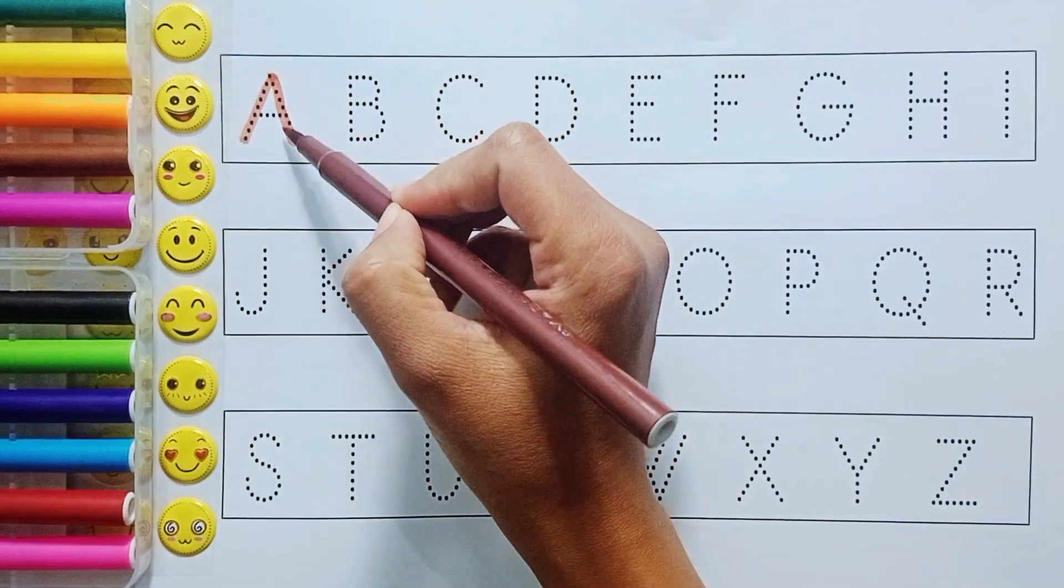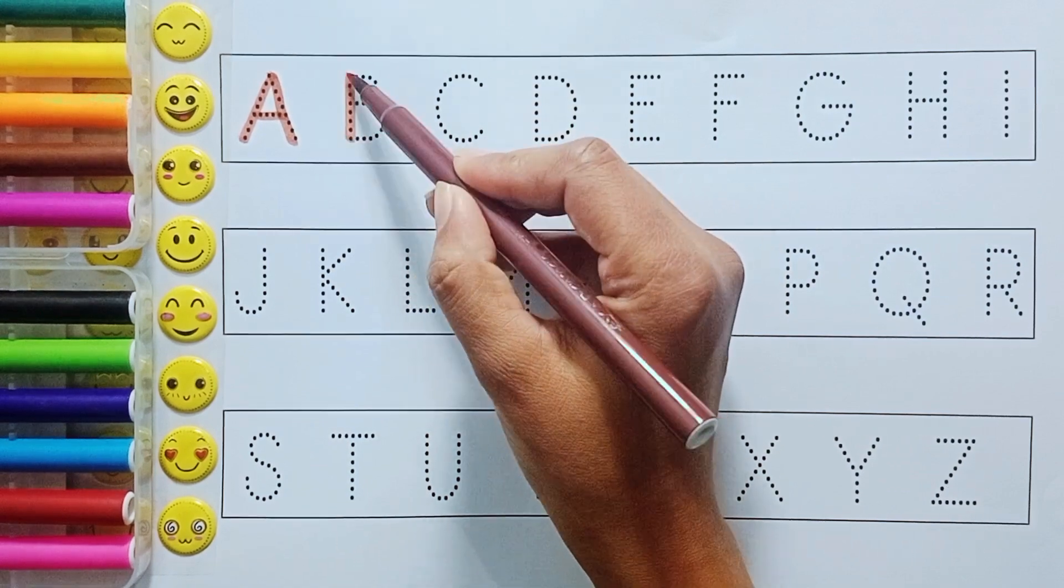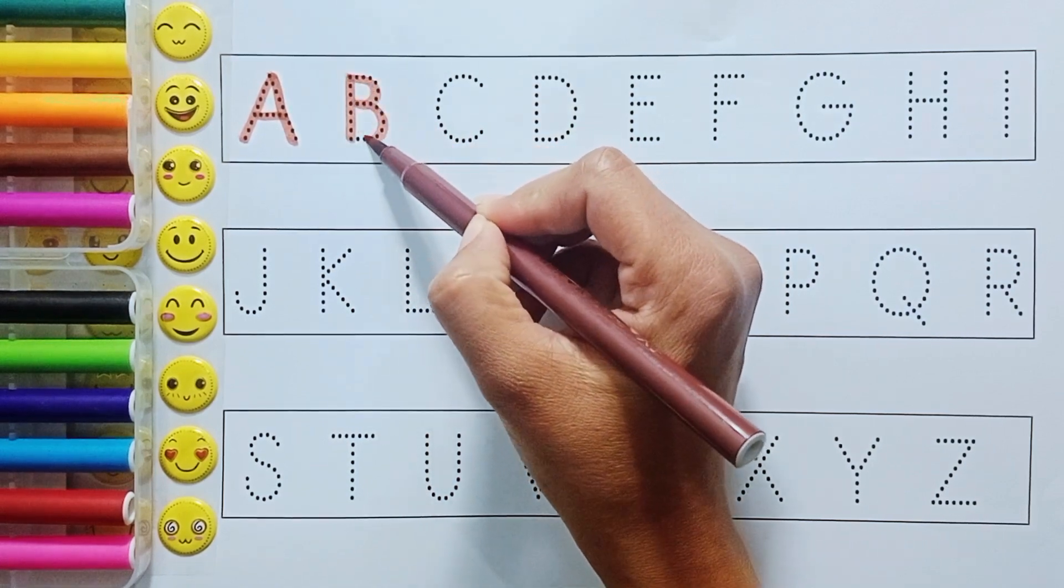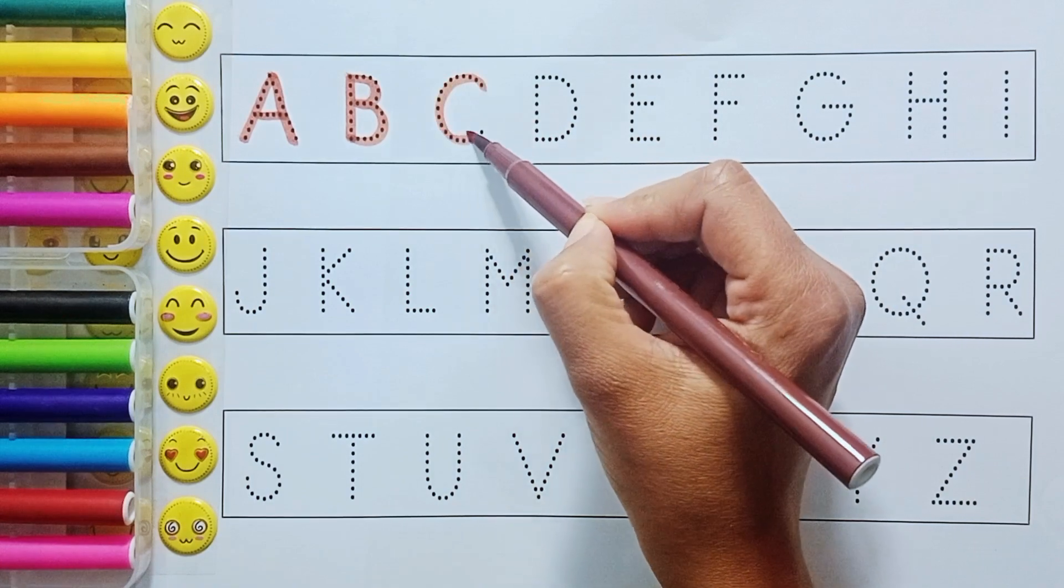A. A for apple. A for apple. B. B for bus. B for bus. C. C for cat.